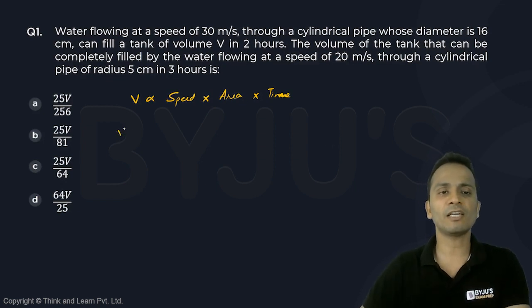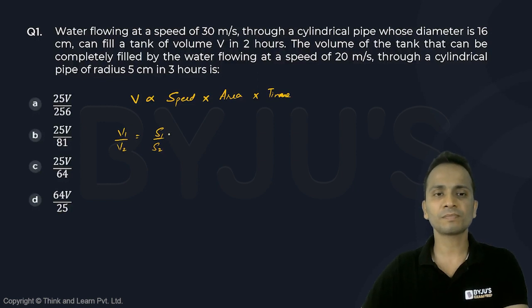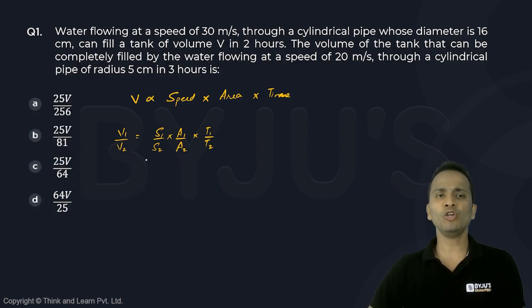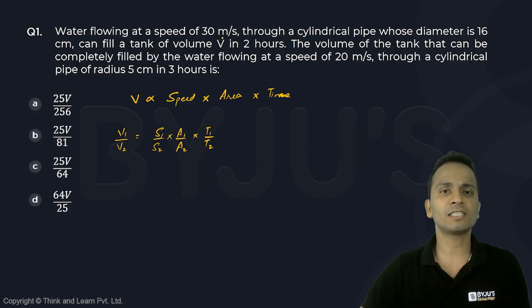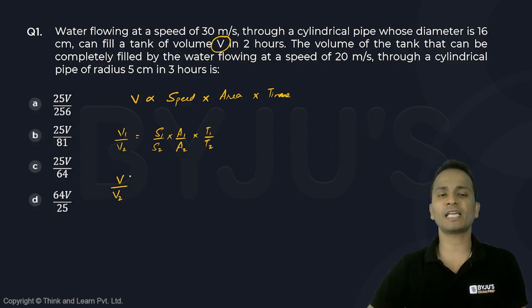I can write a relation that V1 upon V2 equals S1 upon S2, where S1 and S2 are the speeds, multiplied by A1 upon A2, multiplied by T1 upon T2. The volume that can be filled in the first case is given as V, and we have to find the value of V2 in terms of V.